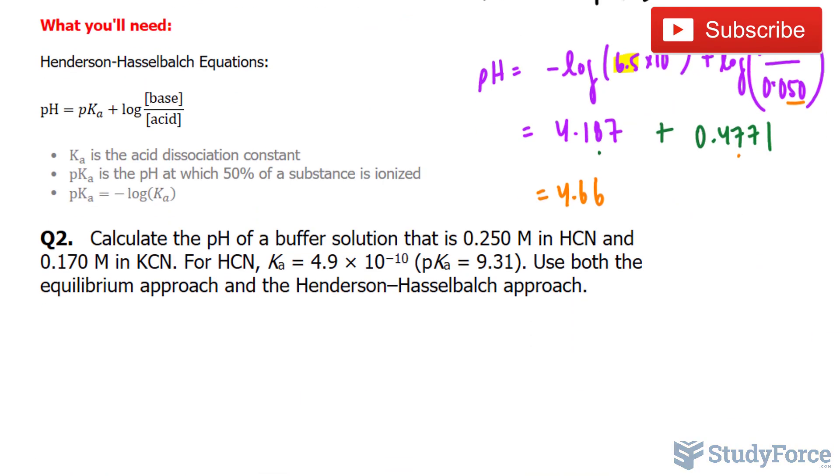Let's move on to question two. Calculate the pH of a buffer solution that is 0.250 molar in HCN, that's our acid, and 0.170 molar of KCN, that being our base.